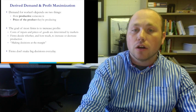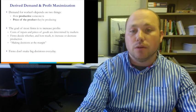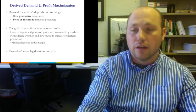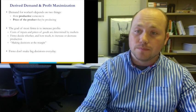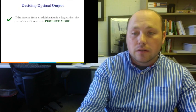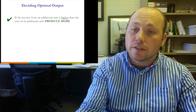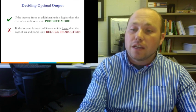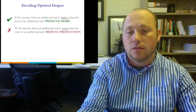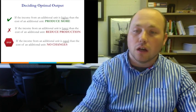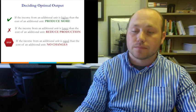Our goal when figuring out how much to produce — the optimal output level — is: if the additional income from another unit is higher than the additional cost, we want to produce more. If the revenue I generate is lower than the cost, I want to reduce production. If the income from the additional unit equals the cost, I'm at a good point and don't want to make any changes.